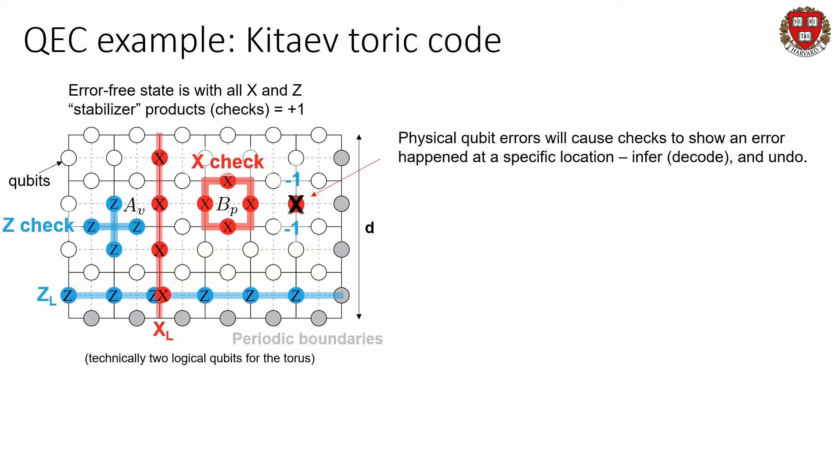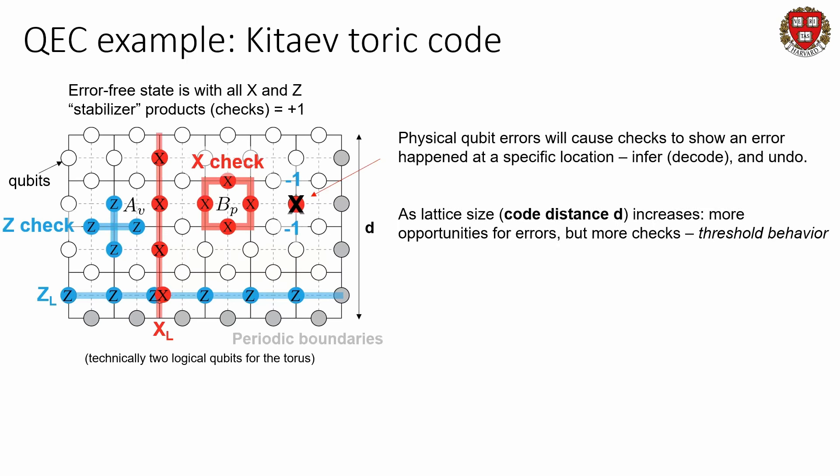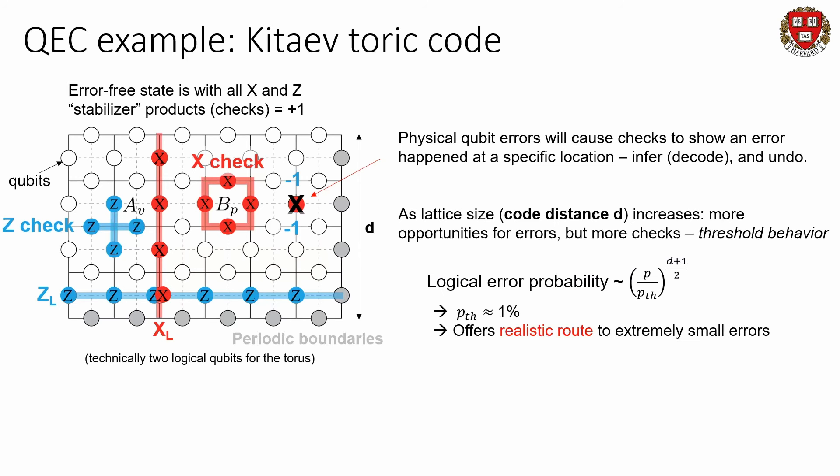An example of error correction: you measure your checks without revealing the underlying physical qubit states, and you might see that two checks both have a minus-one flag go off. From this, you can probably infer that you had an error on one physical qubit that corrupted two of your checks. Through this inference process — which we call decoding — you can undo this change. As you increase the size of your lattice or your code distance d, you get more opportunities for errors but also more checks. This leads to a threshold behavior where the logical error probability can be exponentially suppressed if you get below a characteristic threshold of roughly 1%.